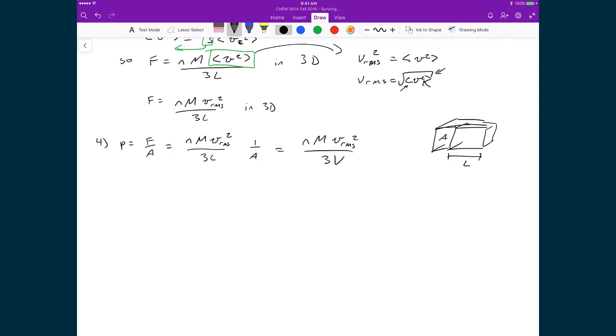Now, of course, this solution for the pressure of a gas inside a box is a little bit unsatisfactory, because we have this root mean squared velocity squared term. So what we'd like to do is to express this in something that's a little bit more intuitive.